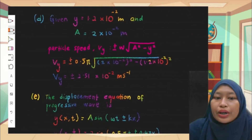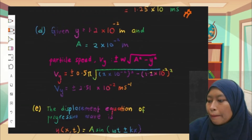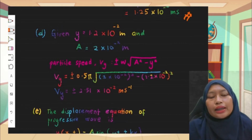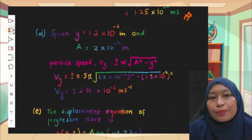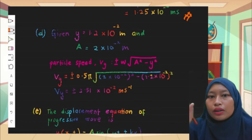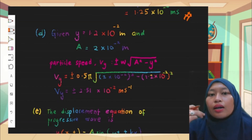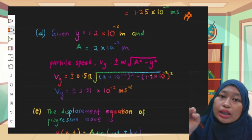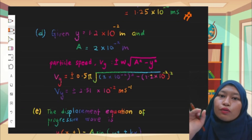For part d, the question asks for vibrational velocity. This topic is actually outside the syllabus for the current course, but it's worth knowing: the keyword 'vibrational velocity' tells you the question is asking about particle speed, not wave speed. Only particles vibrate within the wave, so that's the key distinction.